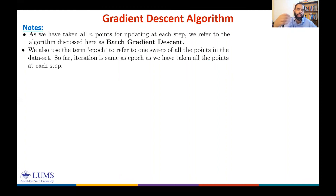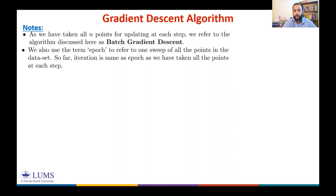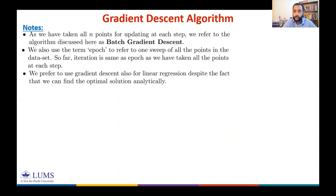You will get used to this term in different contexts. Here, epoch is the same as iteration. We prefer to use gradient descent for linear regression despite having an analytical optimal solution — the reason is computational efficiency.